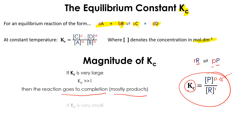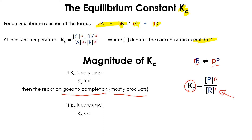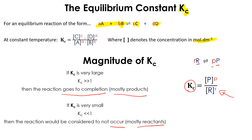What if Kc is very small? If Kc is very small, it means we have a high concentration of reactants. So Kc is much lower than 1, meaning the reaction would be considered to not occur — mostly reactants remain. How do we write the expression or formula for the equilibrium constant? Simply: the concentration of the products raised to the power of their coefficients, divided by the concentration of the reactants raised to the power of their coefficients.